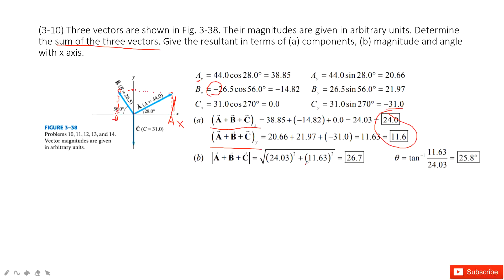And then we can get the magnitude for this addition. Just x-component squared plus y-component squared and square root. And the angle theta is arctangent of vy divided by vx.